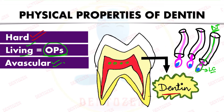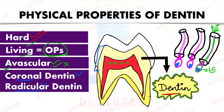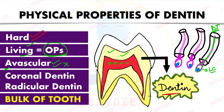Dentine is divided into two parts: dentine in the crown is called coronal dentine, and dentine in the root is called radicular dentine. Looking at the tooth diagram, dentine occupies the maximum part of the tooth among all the hard tissues — dentine forms the bulk of the tooth.